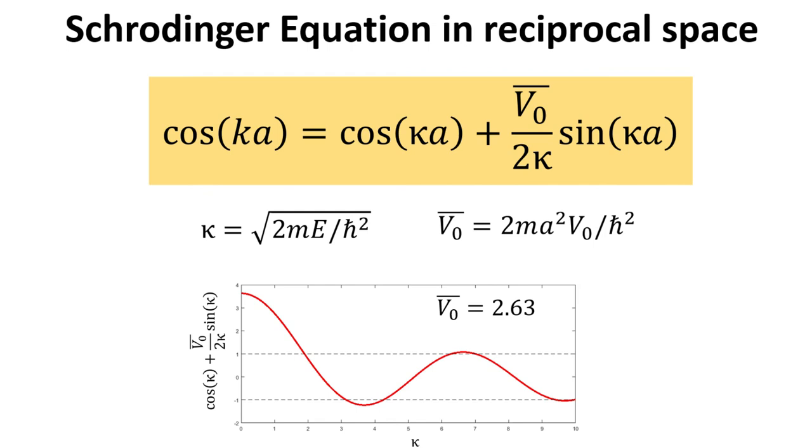Here, we assume the lattice constant, A, to be 1, and V0 bar to be 2.63, without loss of generality.